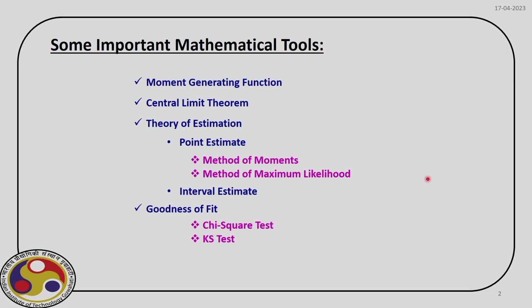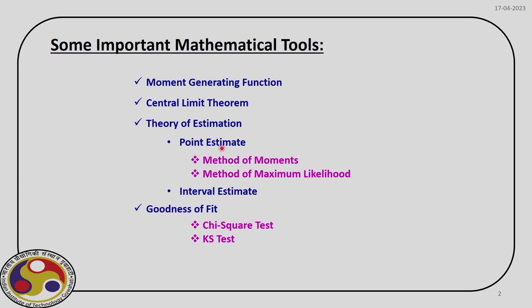In this module, we are going to discuss all these topics. We will start with moment generating function, then we will go to central limit theorem, then we will discuss theory of estimation — there we will talk about point estimates and interval estimates, and within point estimate, we will discuss method of moments and method of maximum likelihood. And finally, we will go to goodness of fit, where we will discuss chi-square test and KS test.